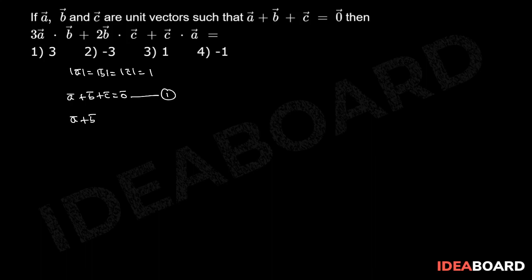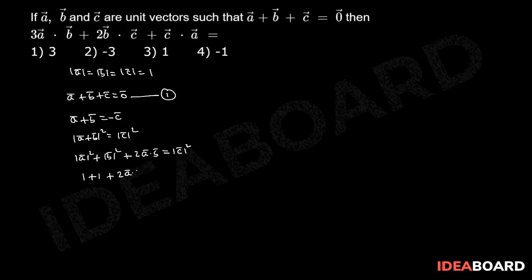Now we have a bar plus b bar equals to minus c bar. By squaring on both sides, mod a bar plus b bar whole square equals mod c bar square. This implies mod a bar square plus mod b bar square plus 2 into a bar dot b bar equals mod c bar square. Implies 1 plus 1 plus 2 into a bar dot b bar equals 1, implies a bar dot b bar equals minus 1 by 2.